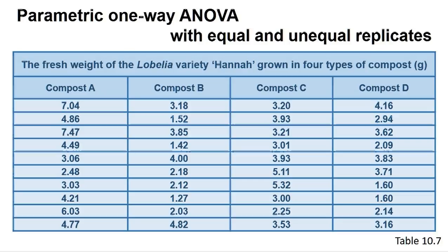The question is whether any of the compost promotes superior growth of the plants. There are two common parametric one-way ANOVA tests implemented by programs, and which one you use depends on whether the variances are similar or not. We can test if the variances are similar, also termed homogeneous, by doing an F-test first on the data. See Chapter 10 in the book and Box 10.7 for further details.